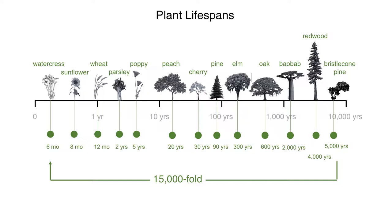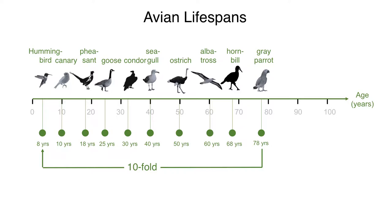Birds in general are much longer-lived for their size — pheasant, goose, condor, seagull, hornbills, and gray parrots, which can live 70 or 80 years. You buy a parrot and you have it literally for a lifetime. Among mammals, we see a tenfold or more difference. Seals are really long-lived for their size.